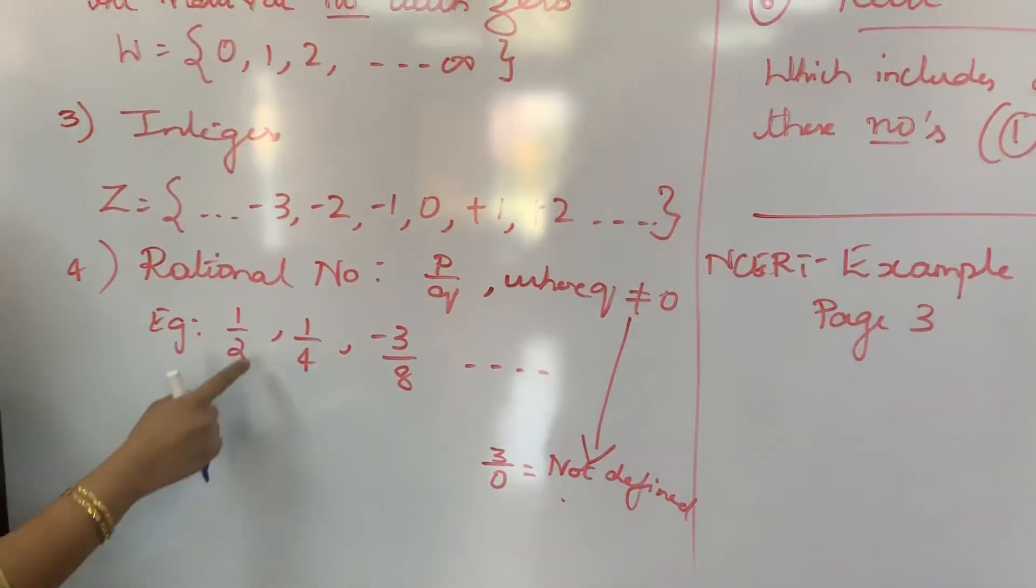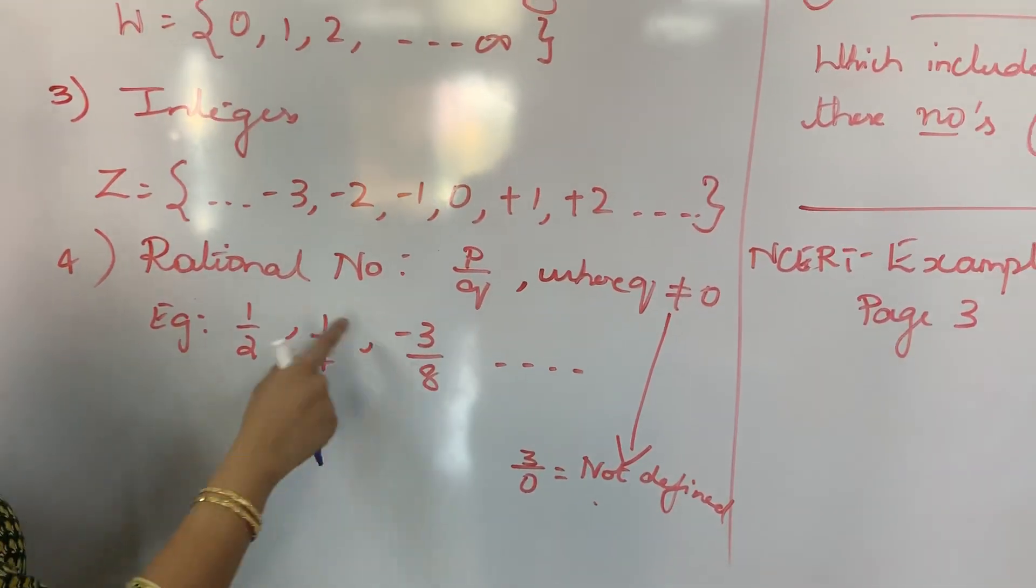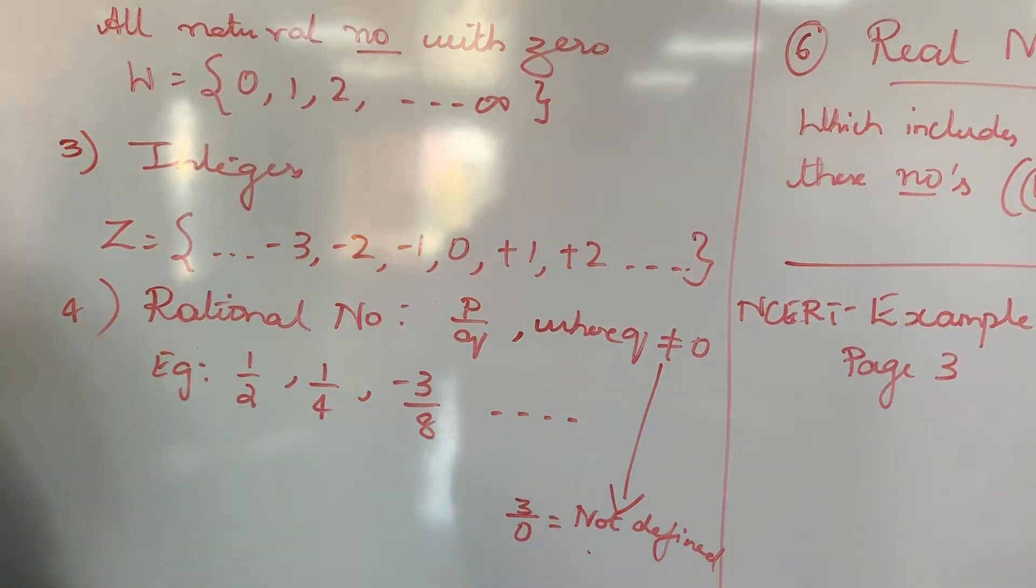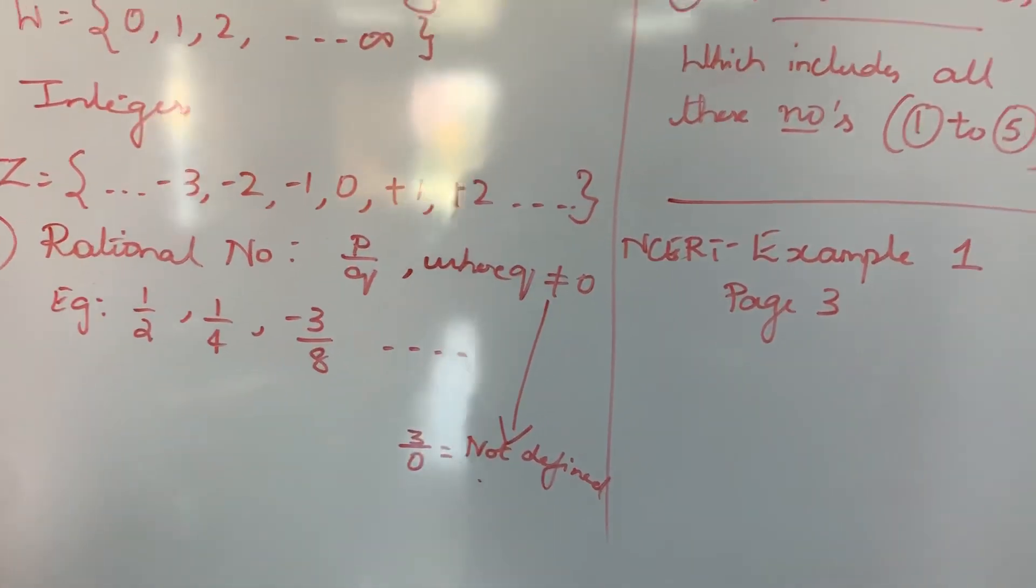So as per the definition, rational numbers are the numbers which can be expressed in the form of P by Q where Q is not equal to 0. This is the reason. Take any fraction: half, 1 by 4. Here even plus and minus both will come. Minus 3 by...